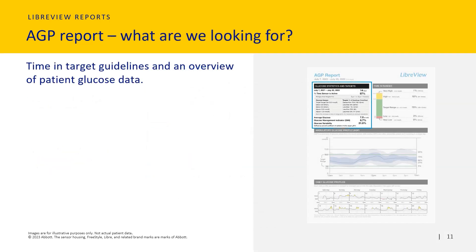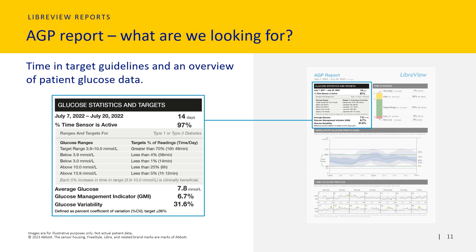The first section, called glucose statistics and targets, gives an overview of how much glucose data has been collected in the past 14 days. The AGP report is only available for 14-day periods, shown as a percentage of time the sensor is active. In this example, you can see that 97% of glucose information has been recorded over the past 14 days. You will see your average glucose as well as something called GMI, glucose management indicator. The GMI is an estimation of your HbA1c based on the last 14 days, so it can be useful to see how much progress you're making and if you're on track.